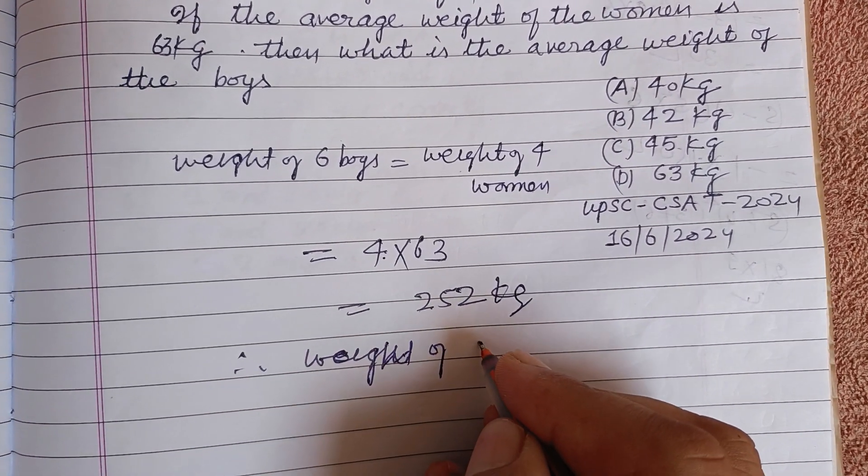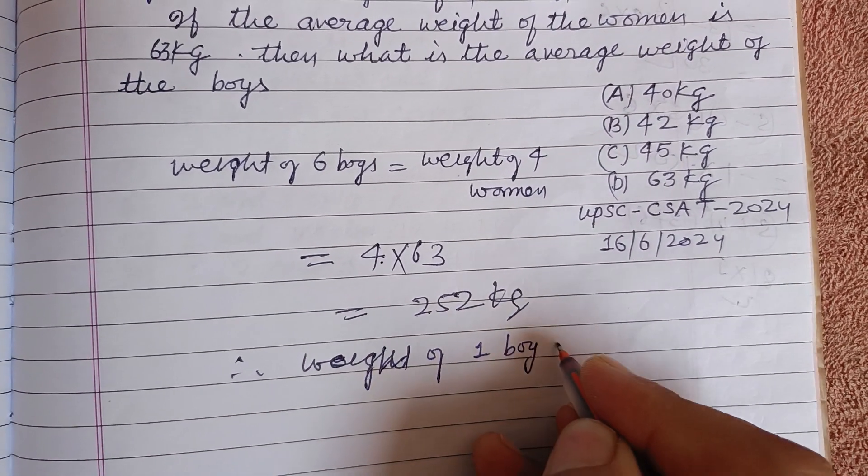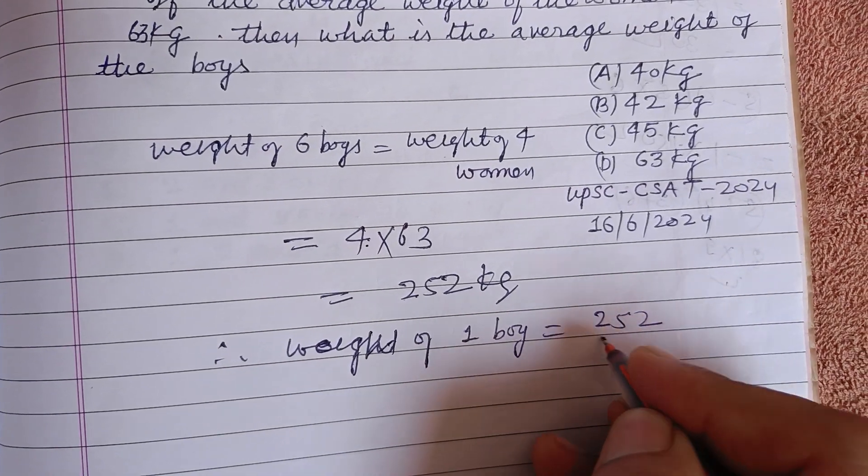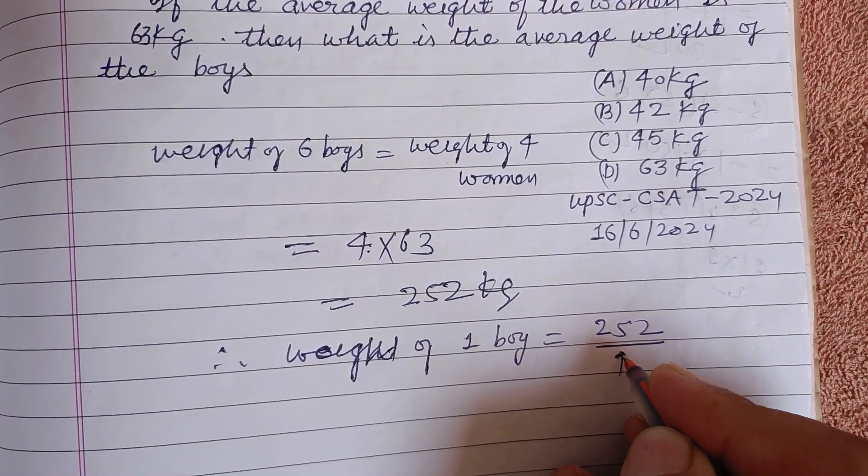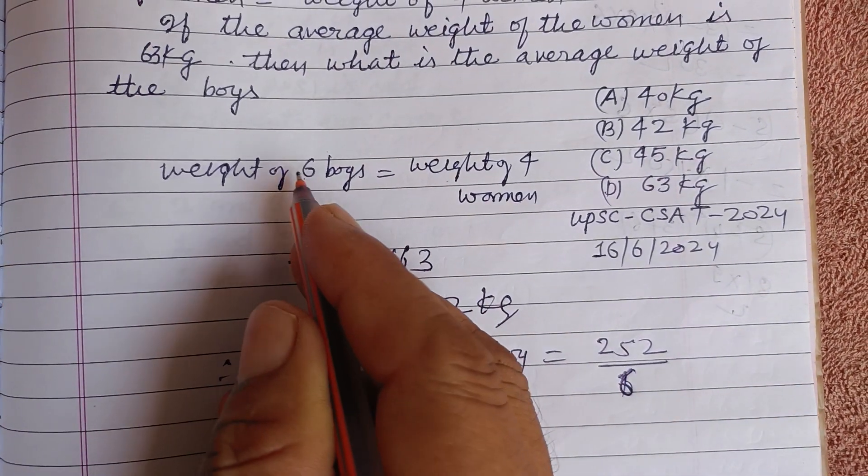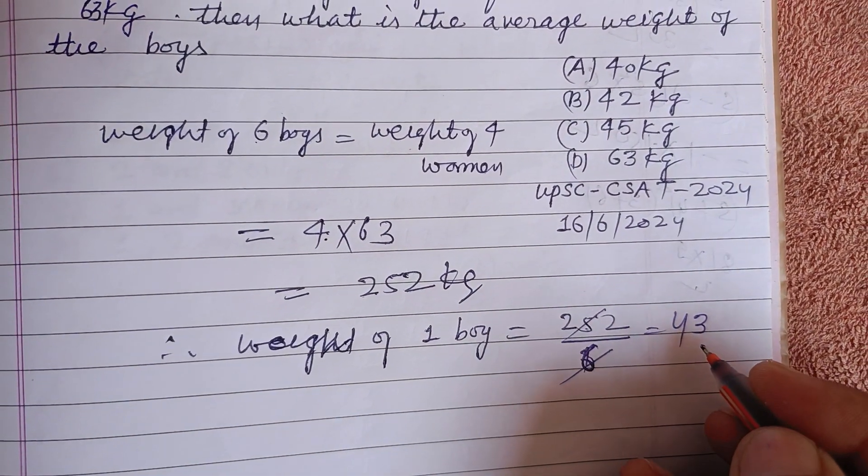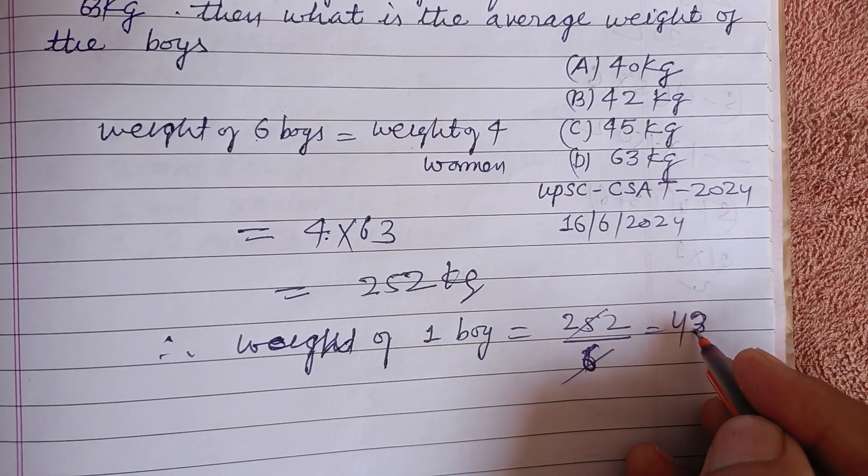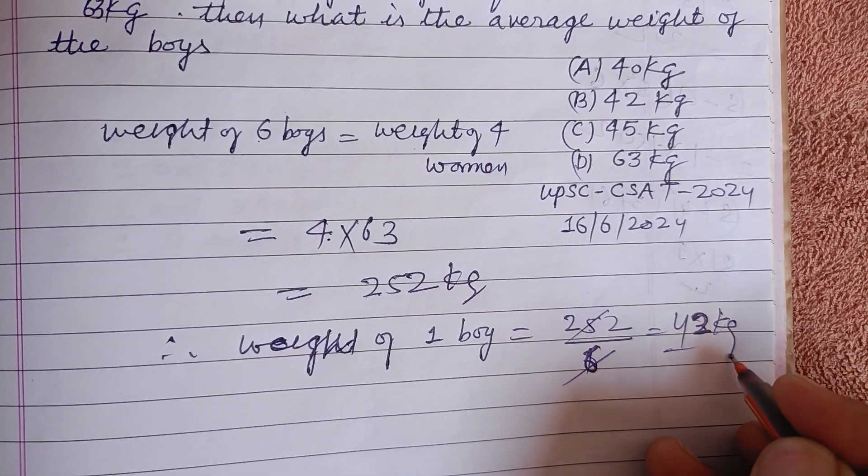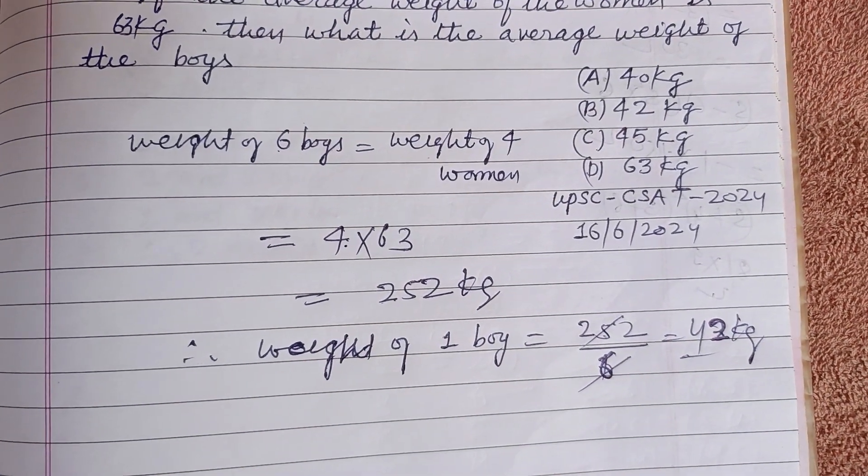Weight of one boy equals 252 divided by 6, because this is the weight of six boys. 6 times 4 equals 24, one remains. 63 divided by 6, 2 times 12. So 42 kilogram is the answer to this question, which is found in option B.